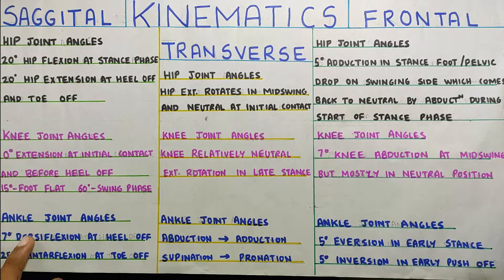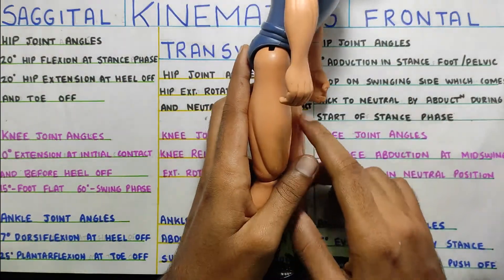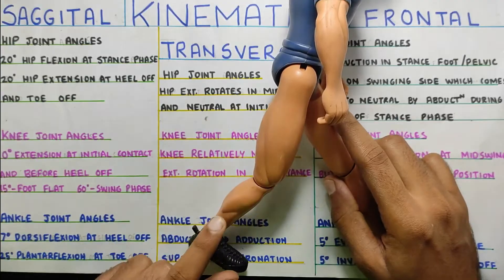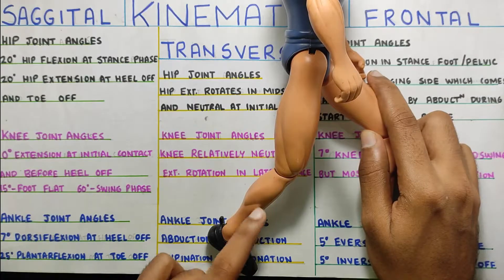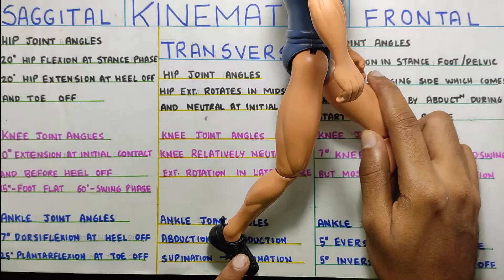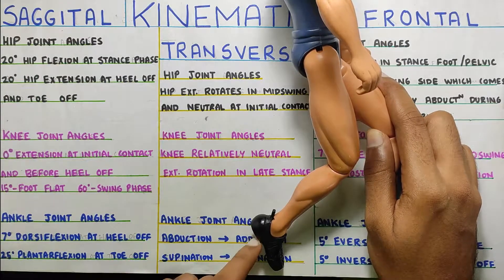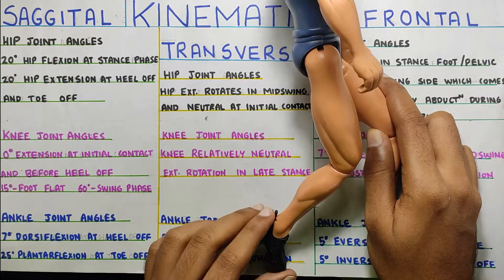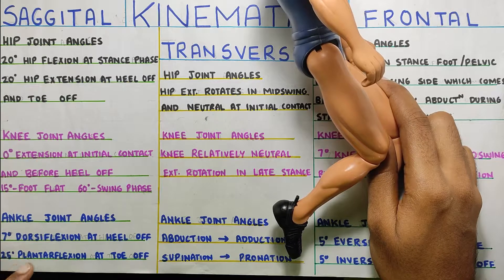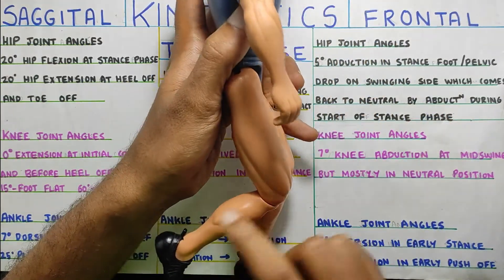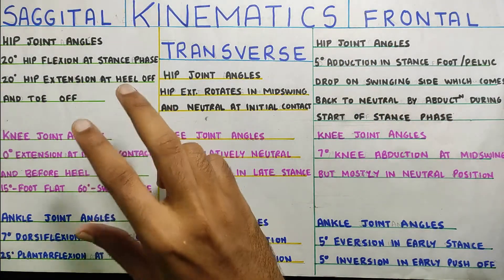Finally for the ankle in the sagittal plane: you need 7 degrees of dorsiflexion at heel off — that's when your leg is behind and your heel is off the ground. Then when you are pushing off the ground at toe off, your foot has to be in plantarflexion — around 25 degrees of plantarflexion — to push off from the ground and go into the swing phase. That is what is seen in the sagittal plane.